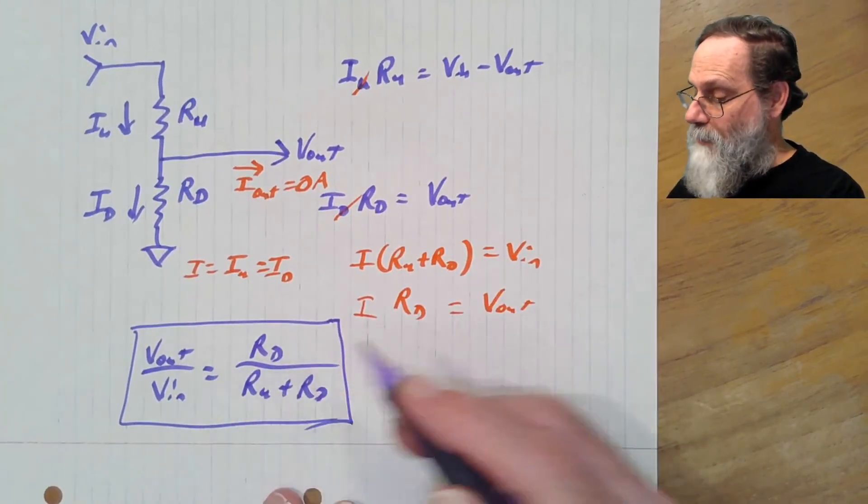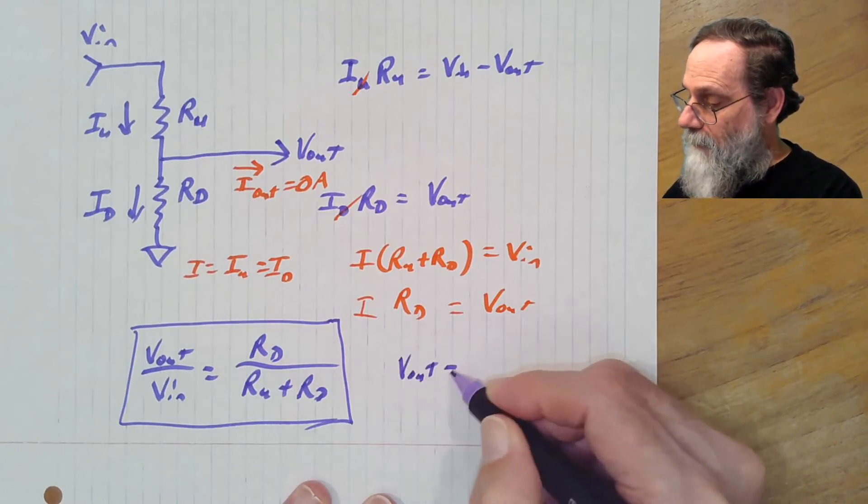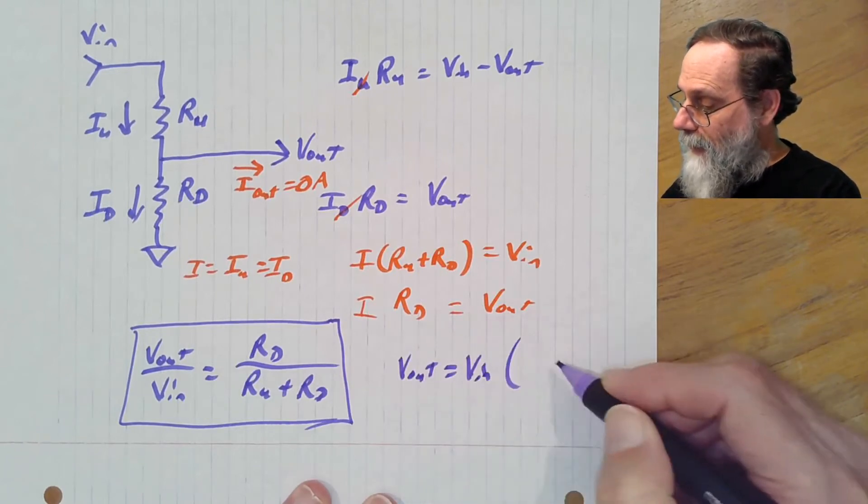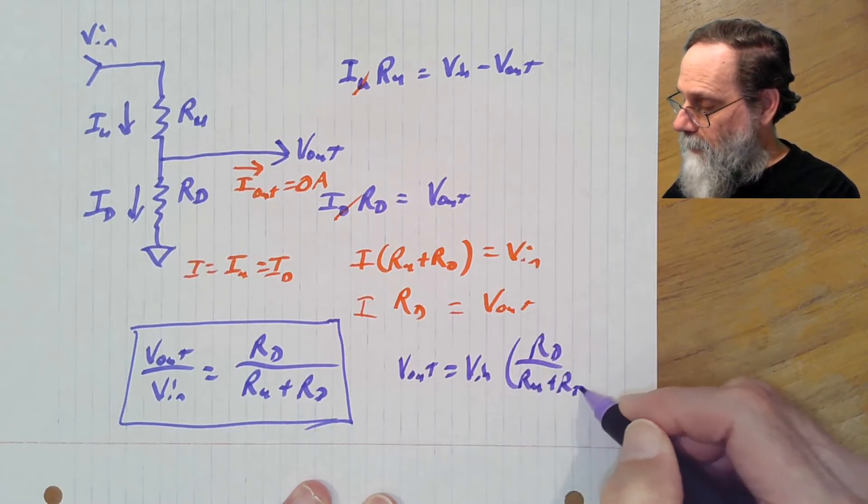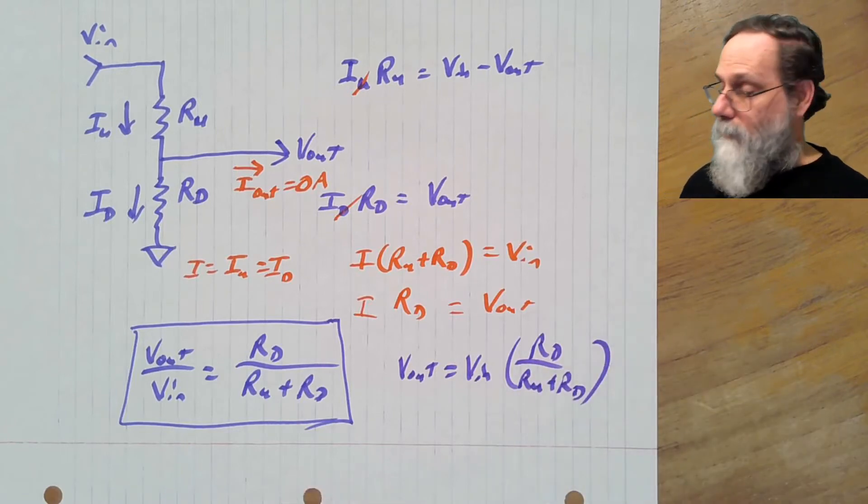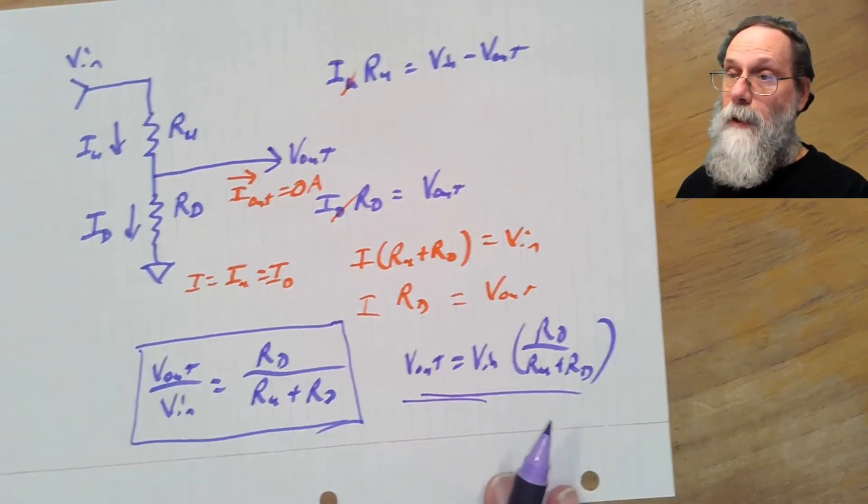You want to write it not in terms of a ratio, but in terms of just what is Vout. Vout is Vin times the ratio Rd over Ru plus Rd. So, another way of writing the voltage divider equation.